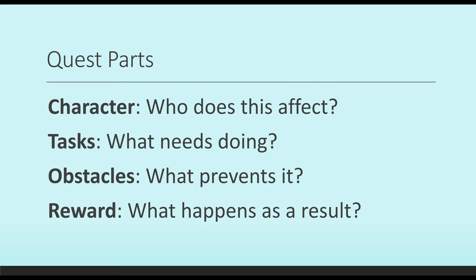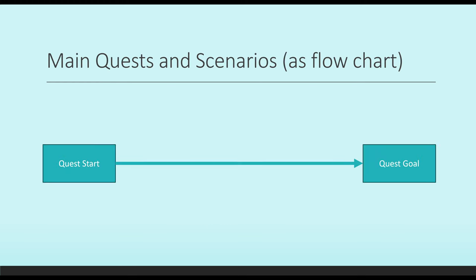As we think about these, let's pair them with thinking of things now in a flow chart. So the main quest, if we were to graph on a flow chart from beginning to end, we would have the quest start and the quest goal. We would end with the goal being completed.